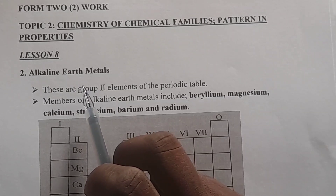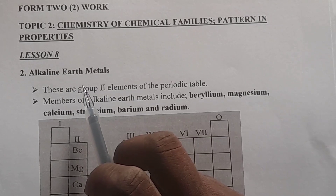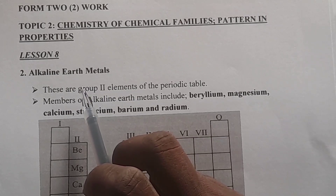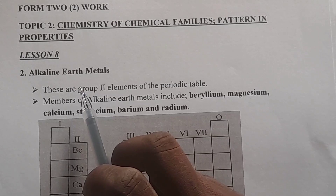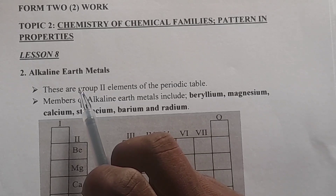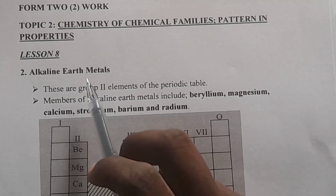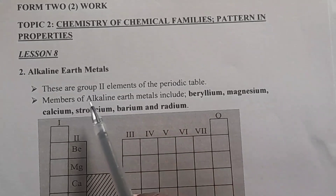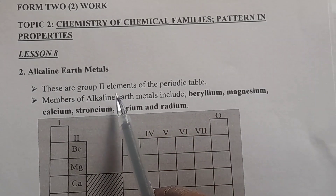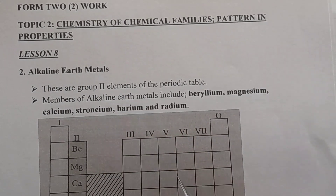If you know alkali metals, that means you know most of the things about alkaline earth metals. For example, we said alkali metals are group 1 elements in the periodic table. So if you are asked what are alkaline earth metals, the answer will be: these are group 2 elements of the periodic table.